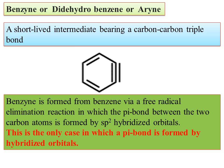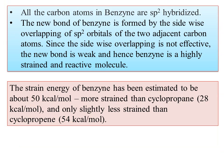This is benzyne, which is sp2-hybridized. It has a triple bond. All the carbon atoms in benzyne are sp2-hybridized and are perpendicular to the plane of the ring. The new bond of benzyne is formed by the sideways overlapping of the sp2 orbitals of the two adjacent carbon atoms. Since the sideways overlapping is not effective, the new bond is weak and benzyne is a highly strained and reactive molecule. The strain energy of benzyne has been estimated at about 50 kcal per mole.